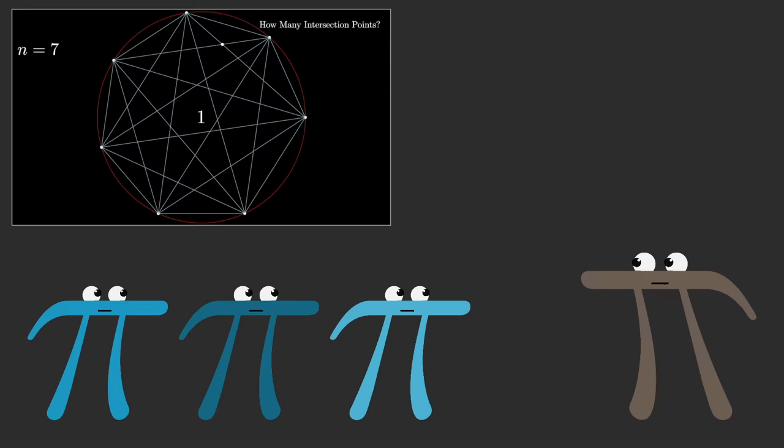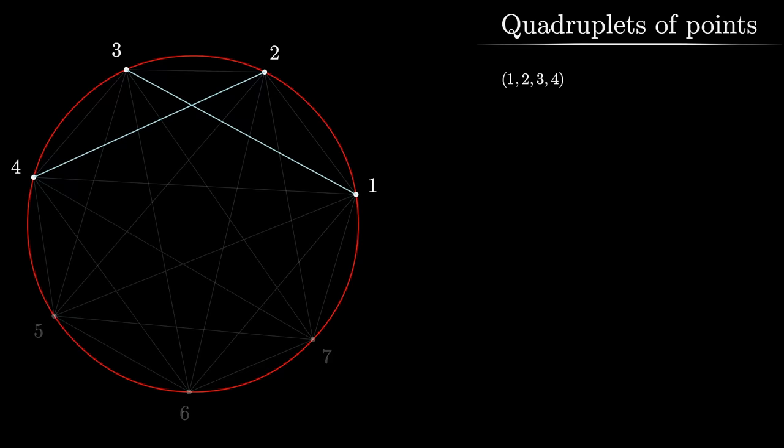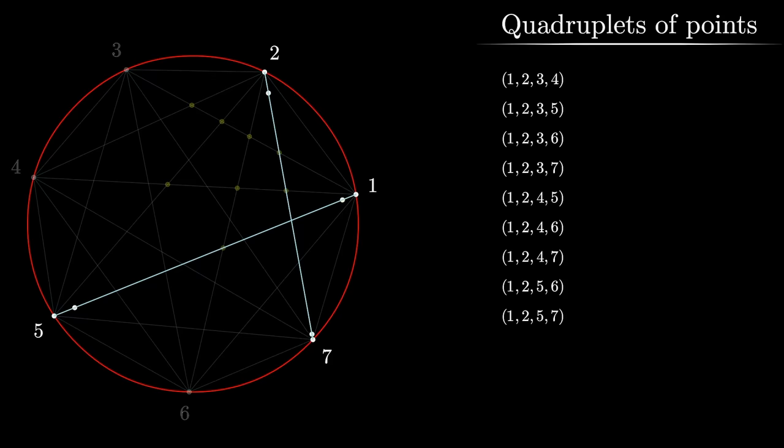I'd encourage you to try to pause and think about it for yourself. And if you do that, you give yourself a moment. Maybe if you're a little bit lucky, here's one thing you might notice. Every intersection point is uniquely associated with a quadruplet of points on the exterior. For a given quadruplet, you look at the two kind of diagonal chords between them, and those will intersect within the circle. And it goes the other way around. Every intersection point corresponds with some quadruplet of points.